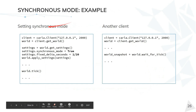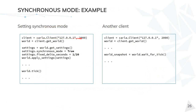In code, we need to connect to the server and get the world. From the world we have the method getSettings, which gives us the current settings. The synchronous mode is a boolean — if set to true, we are in synchronous mode, otherwise in asynchronous mode. If we set synchronous mode, we also have to define the fixed delta seconds, for example here for 20 frames per second. Then we apply the settings, and one of the clients will need to call world tick.